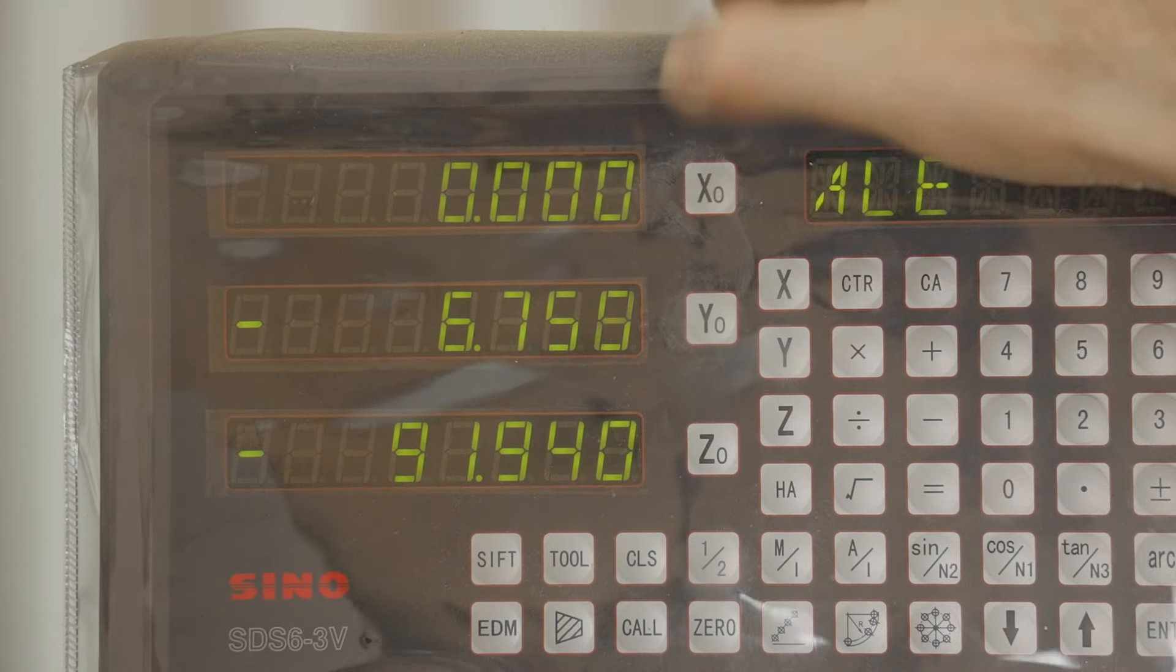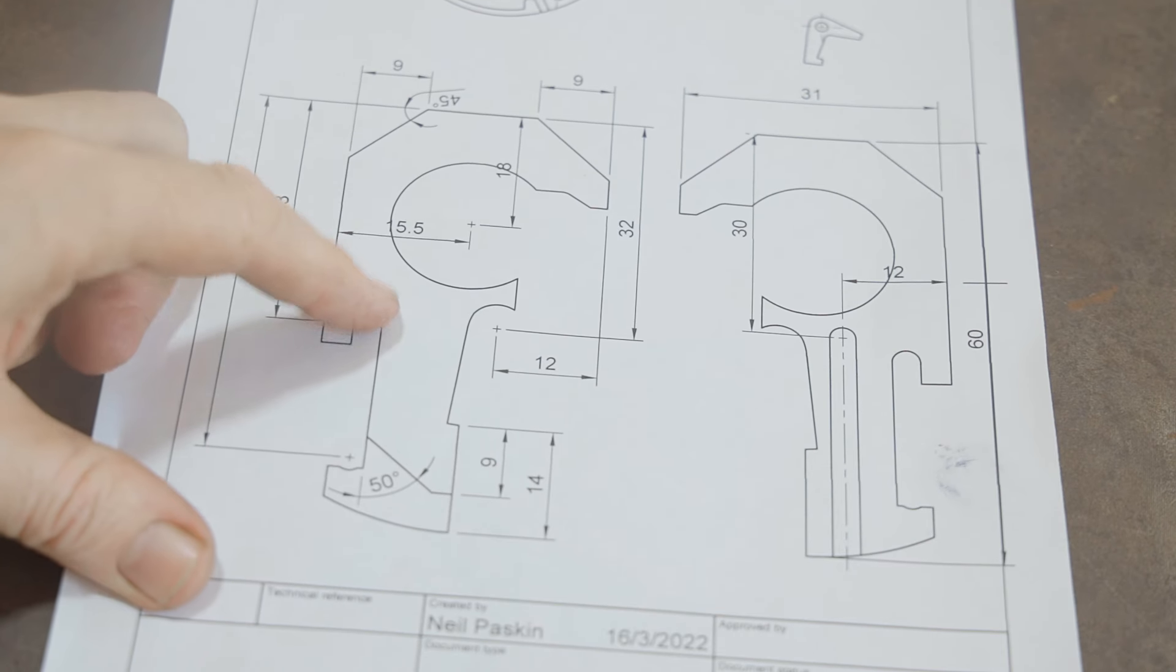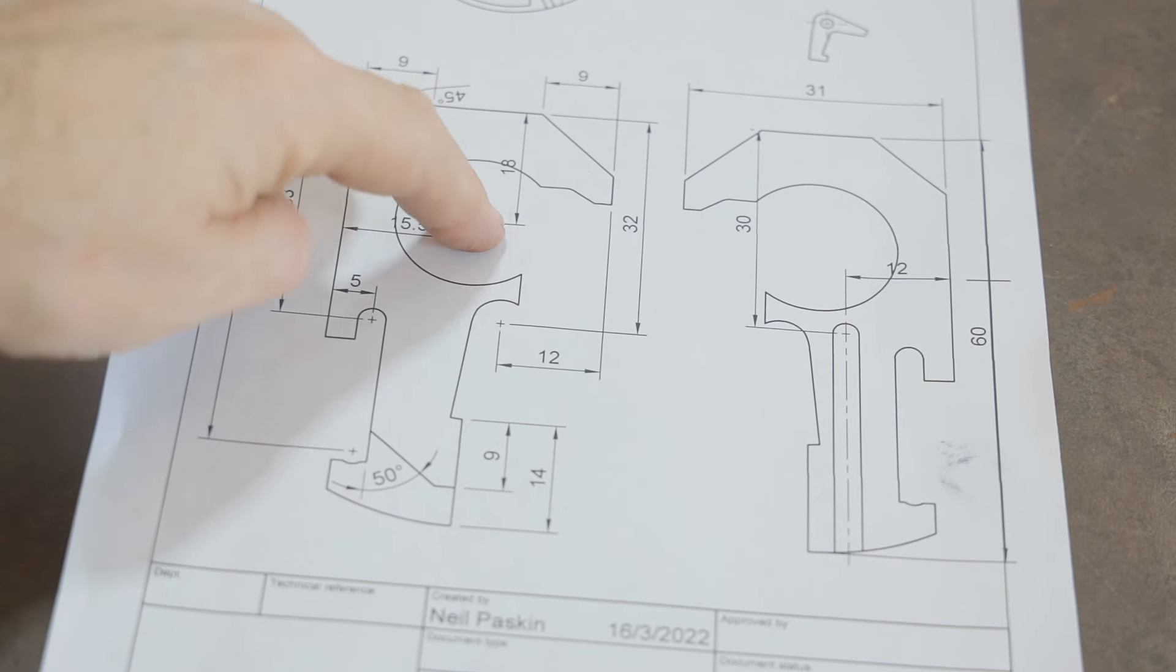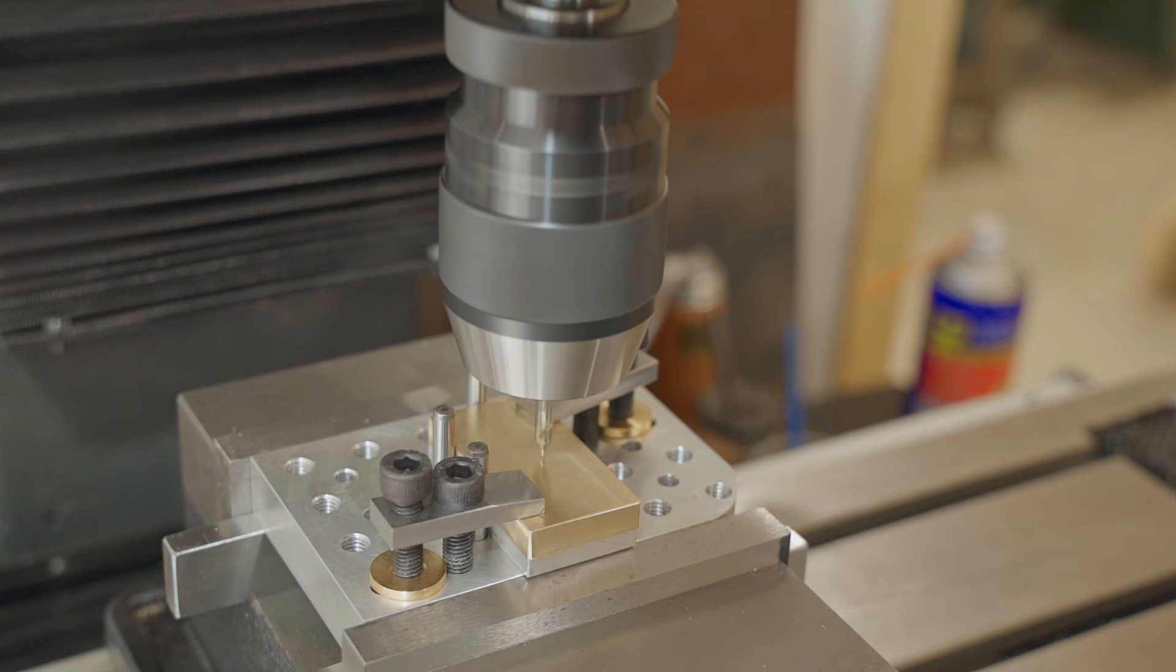I've printed out the shackle dimensions and next I'll drill these four holes which will start the process of shaping it, and I'll take each dimension from the top left corner.